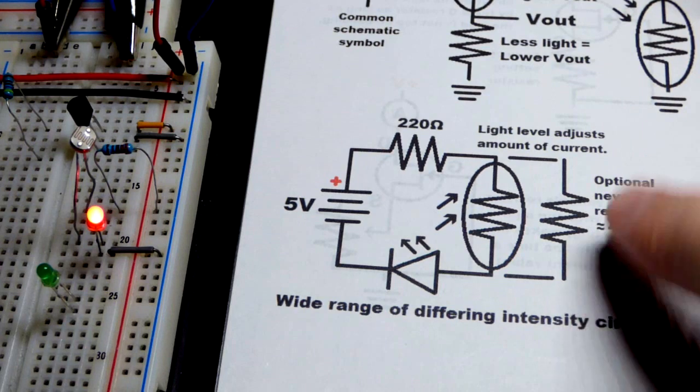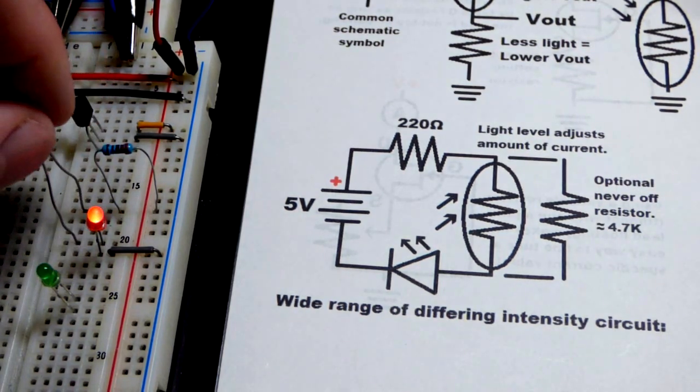I added something else to this diagram: a resistor in parallel with the light dependent resistor. And that way, we have a minimum amount of current no matter what. In fact, we always have at least a little bit more current being added to the LED. Some of it going through the light dependent resistor. Some of it going through this resistor.